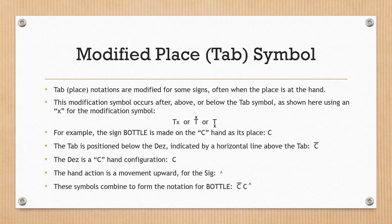Modified place TAB symbol. TAB/place notations are modified for some signs, often when the place is at the hand. This modification symbol occurs after, above, or below the TAB symbol. For example, the sign BOTTLE is made on the C hand as its place. The TAB is positioned below the DES, indicated by a horizontal line above the TAB. The DES is a C hand configuration, capital letter C. The hand action is a movement upward for the SIG. These symbols combine to form the notation for BOTTLE.